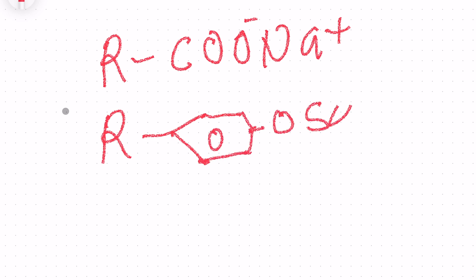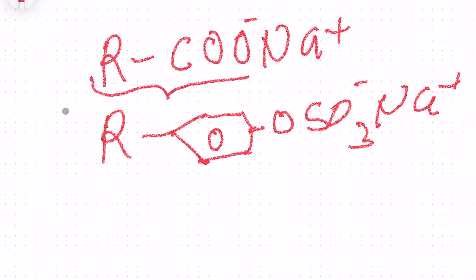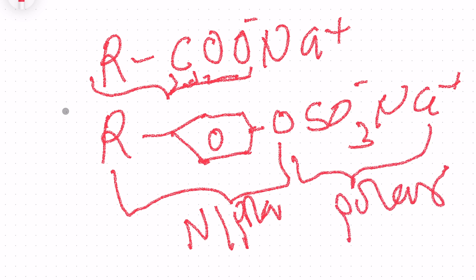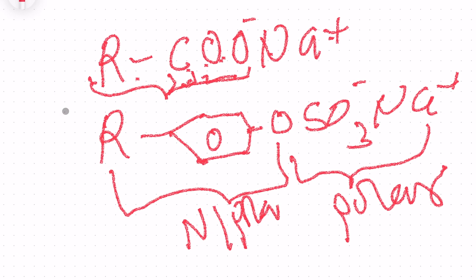Notice that both structures — the soap and the soapless — have two ends. This part, the R, is called the non-polar end. And this head here is called the polar end. For the soap, the non-polar is the R, and the polar is COONa. For the soapless, R up to the end of the ring is the non-polar, and OSO₃Na is the polar end. When you see a sulfur in the structure, that is a soapless detergent. When you don't see sulfur — only COONa — that is a soap.